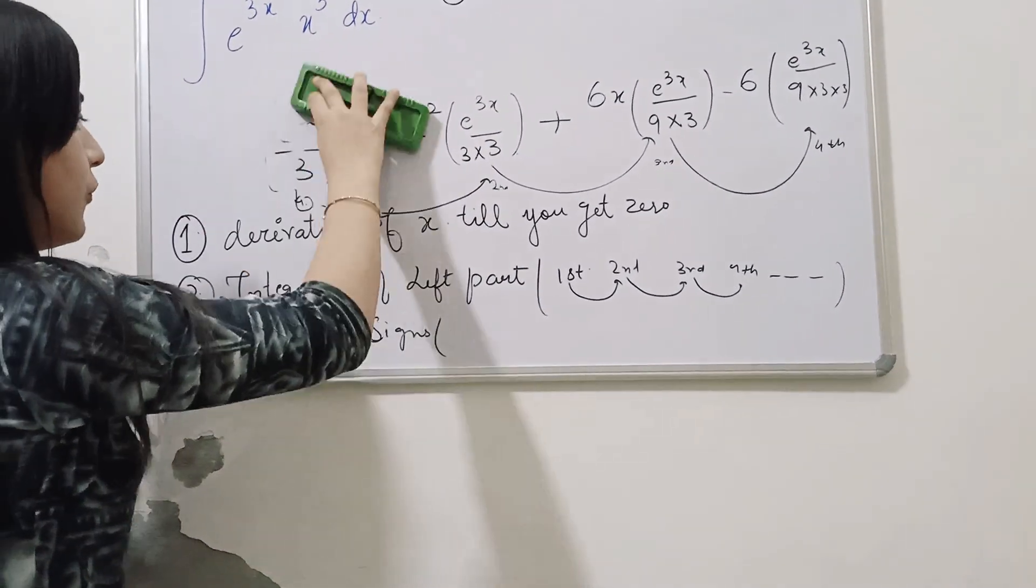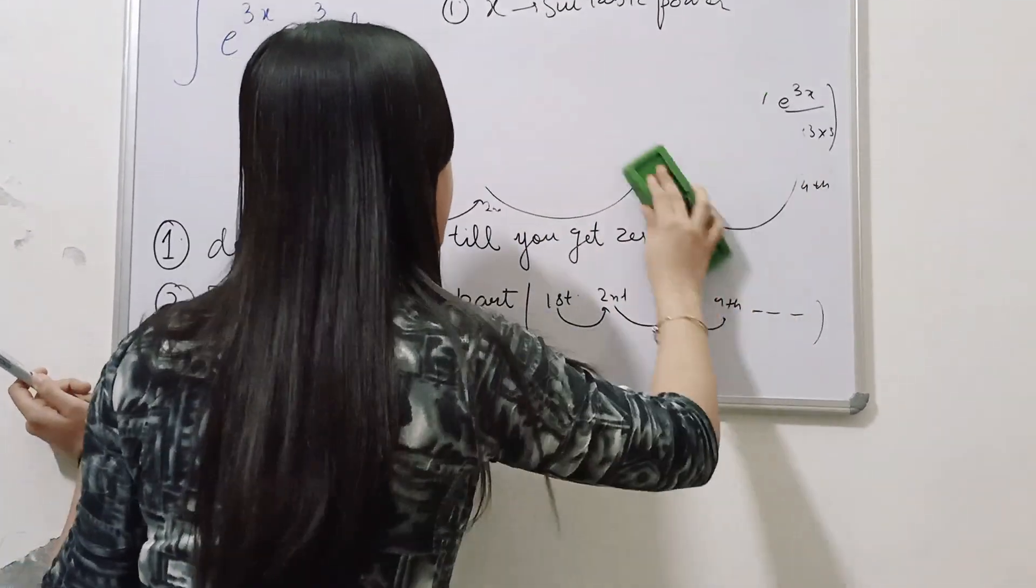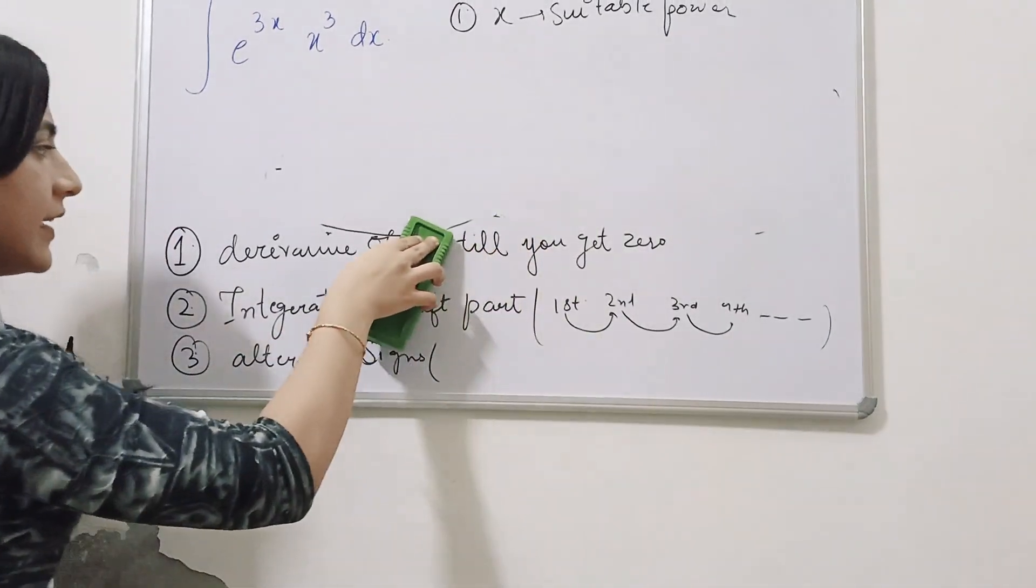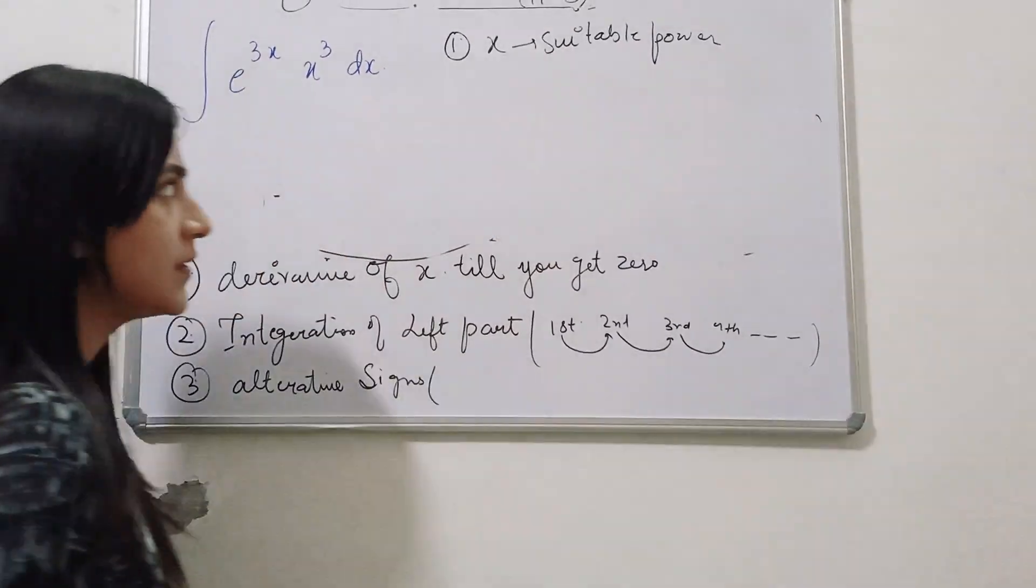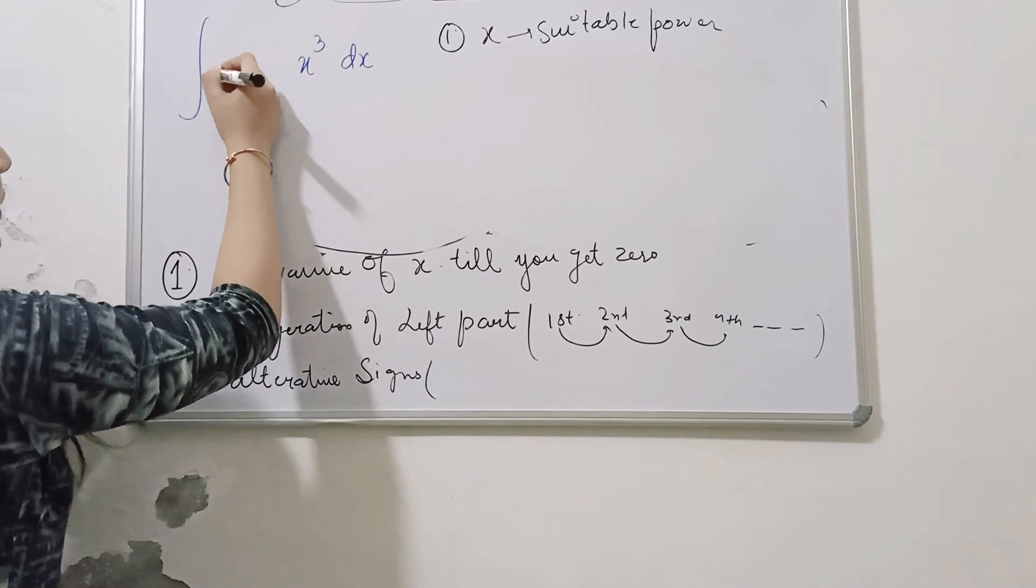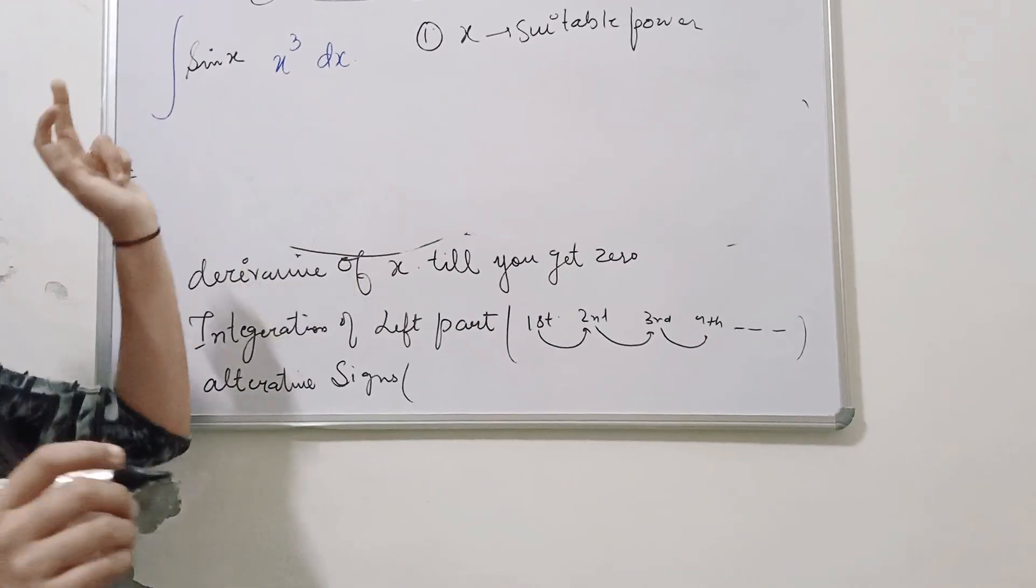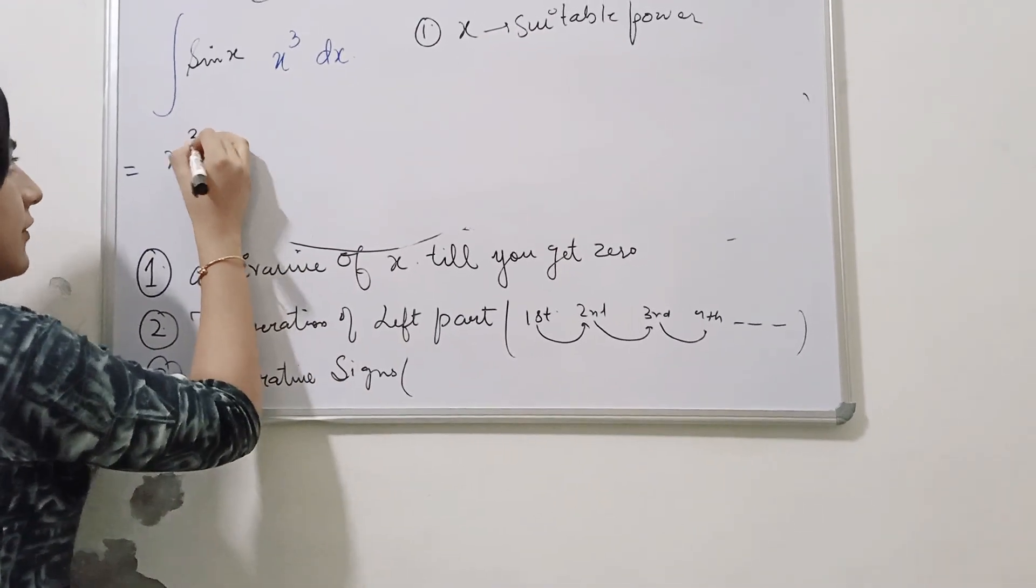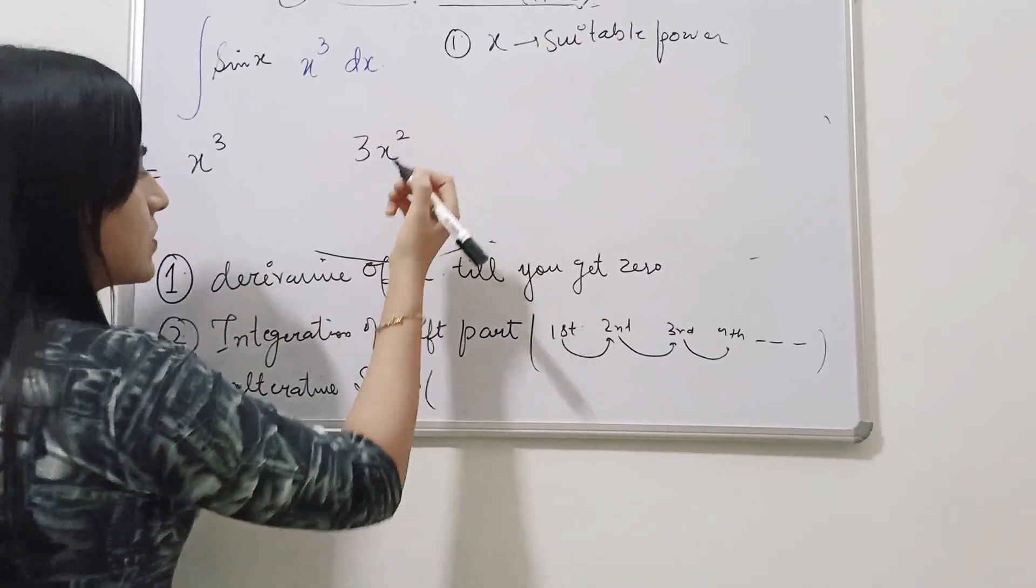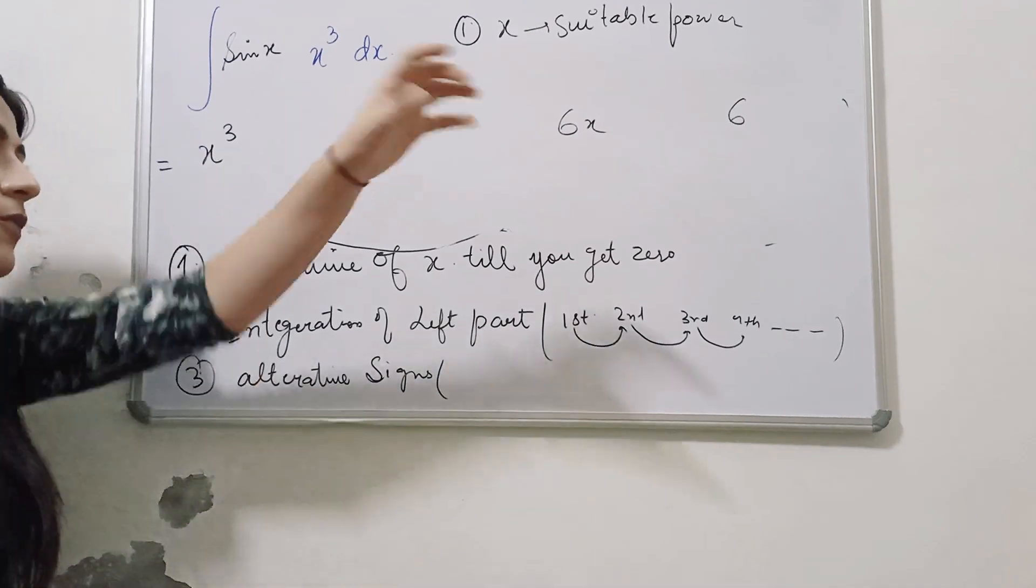Let's see in another example, following the same algorithm in that also. So the very first step, what you have to check in any question, it is, your x must be there. Suppose your question is x cube into sin of x, so the very first step, it is the doing the derivative, so it is x cube, then it will come as 3x square, then it will 6x and then last is 6 and last is obviously zero, which I am not going to write.